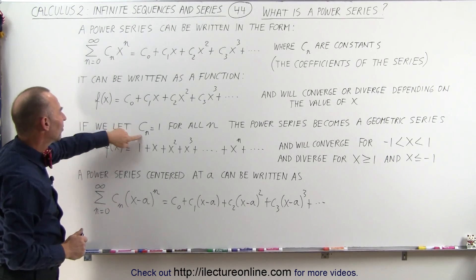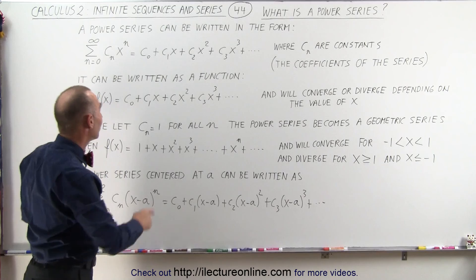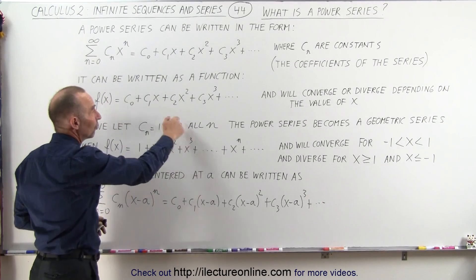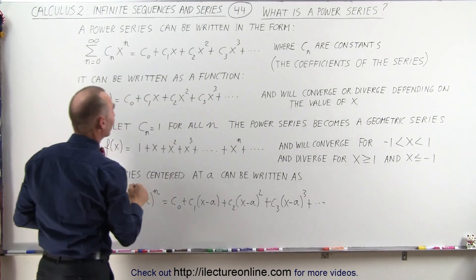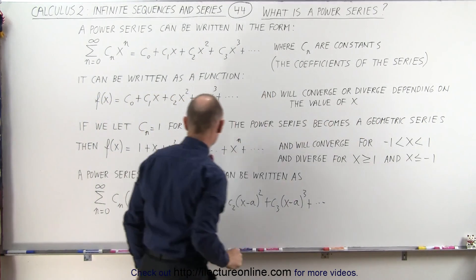Now, if we let c sub n equal 1 for all n, in other words, if we turn every one of these constants, as we call them, the coefficients of the series, if we turn them all into a 1, then the power series becomes a geometric series.